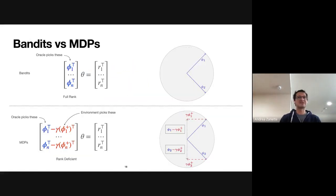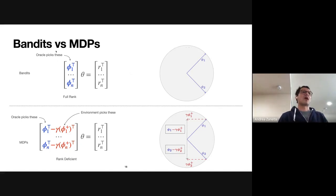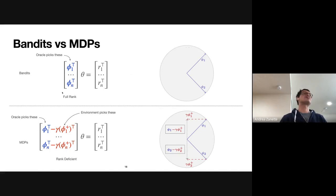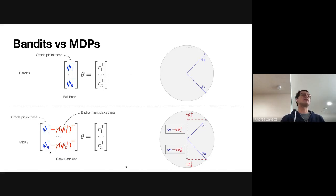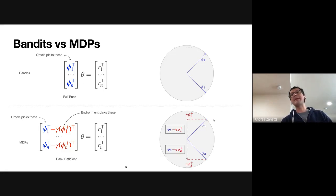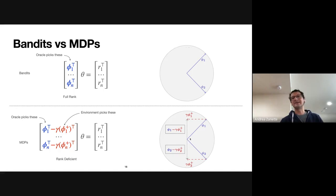Comparing bandits and MDPs: in bandits, the oracle can pick all features and ensure the matrix is full rank. In Markov decision processes, the oracle can only select one piece of the matrix, while the environment picks the next-state feature by choosing dynamics adversarially to undo learning along one axis. Adding more feature vectors doesn't solve the problem for the same reason — the environment can always act adversarially.